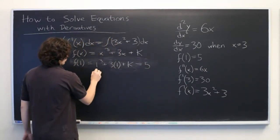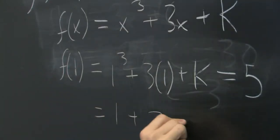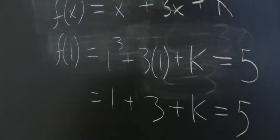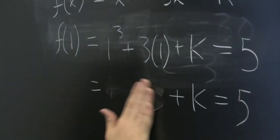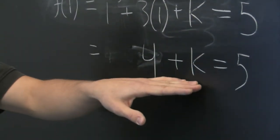So, 1 cubed is just 1. 3 times 1 is 3, plus k equals 5. Well, 1 plus 3 is just 4. So, we can quickly see that k is 1.